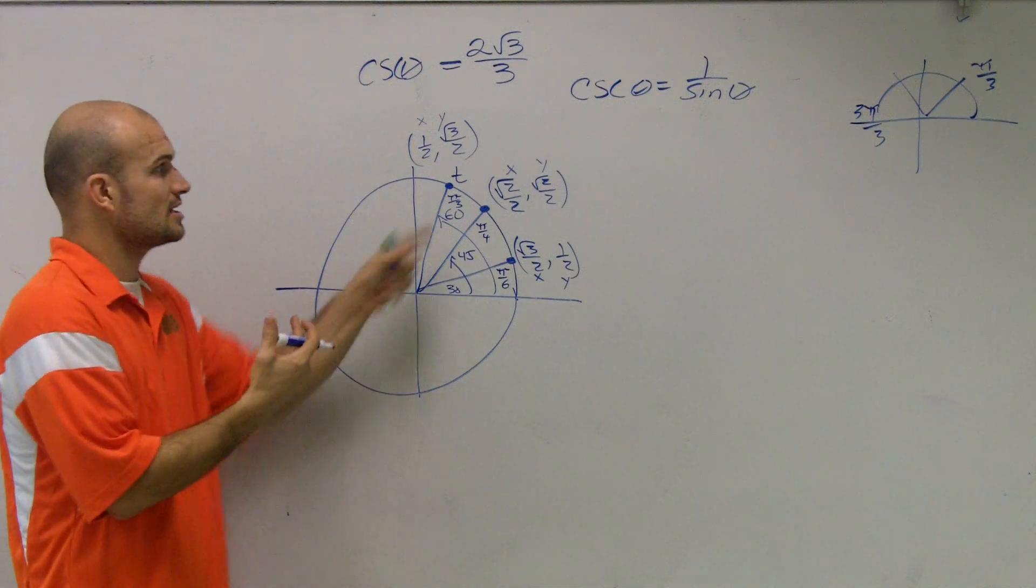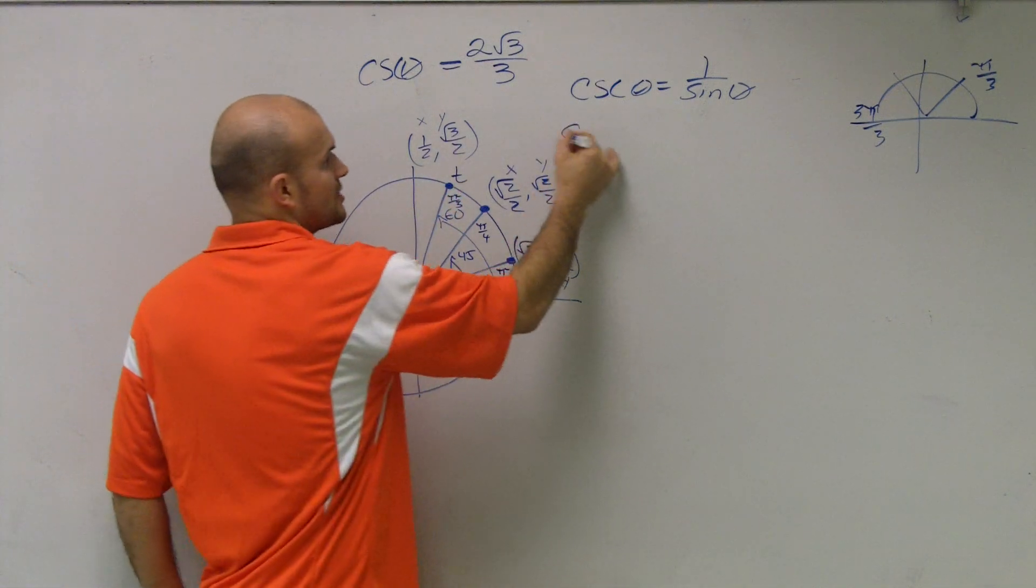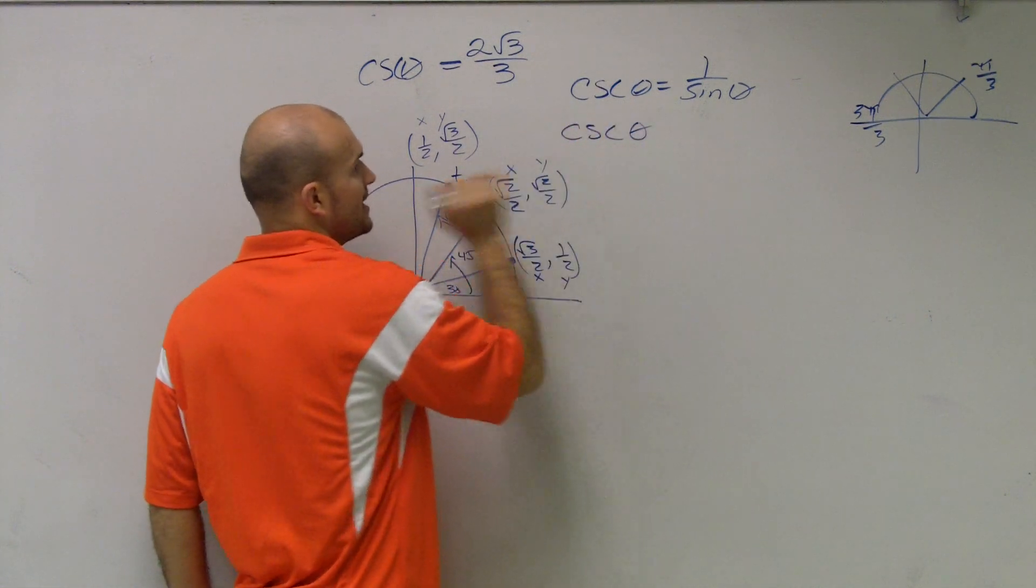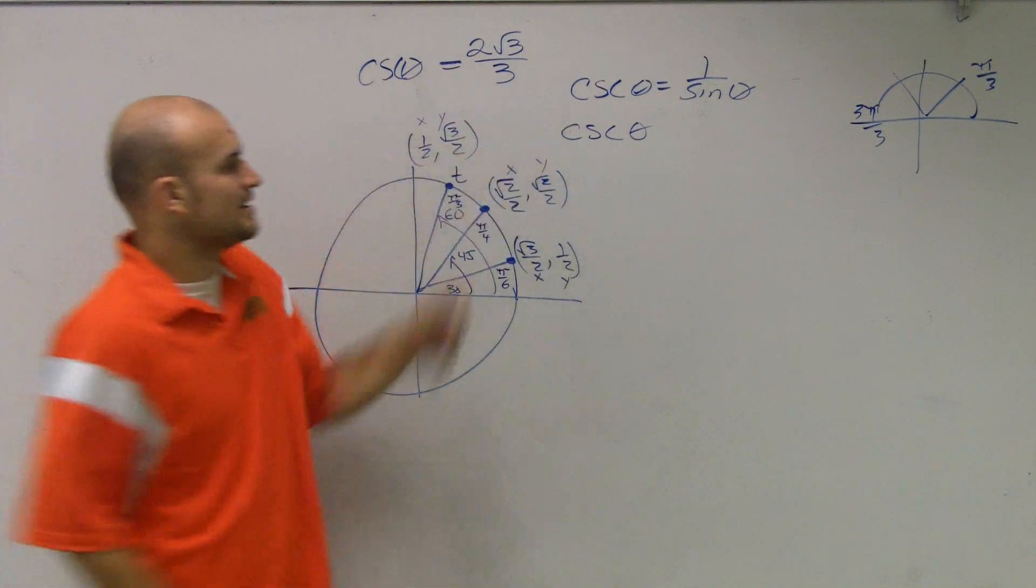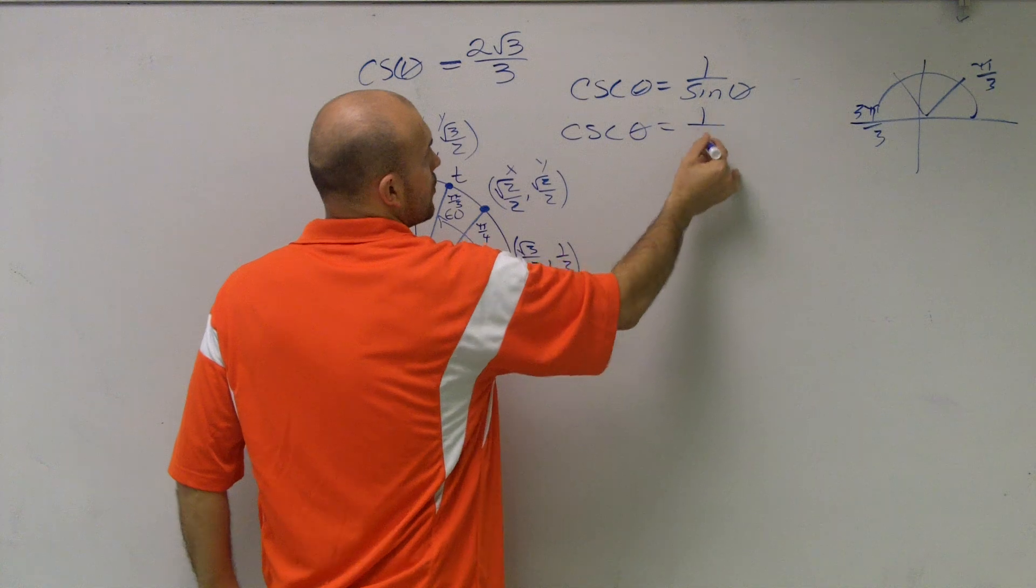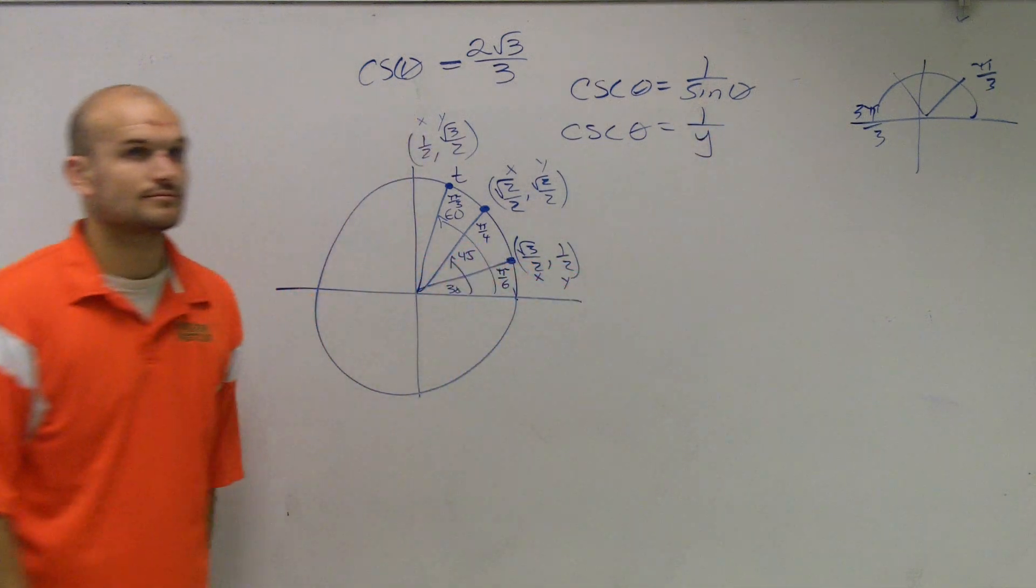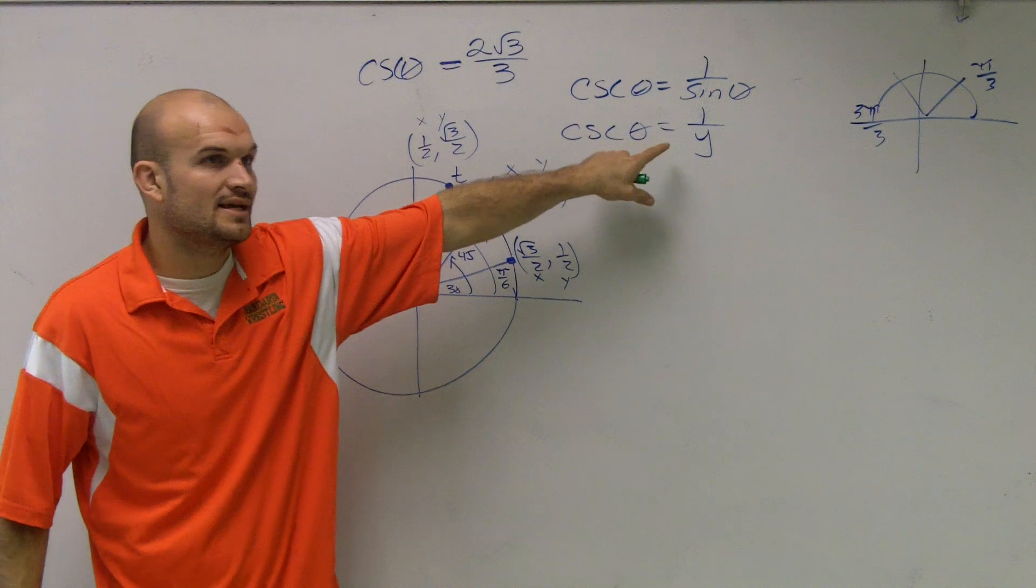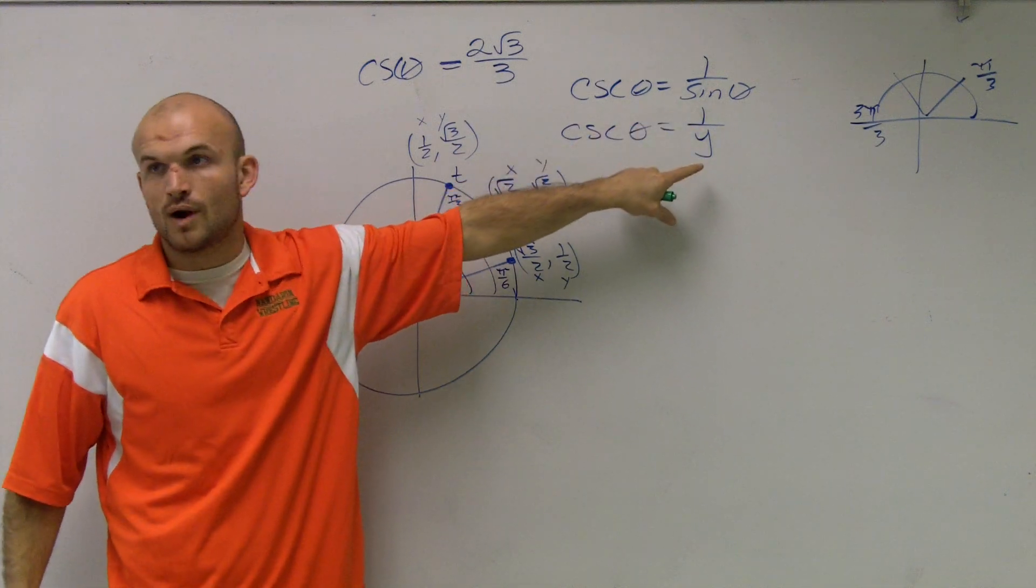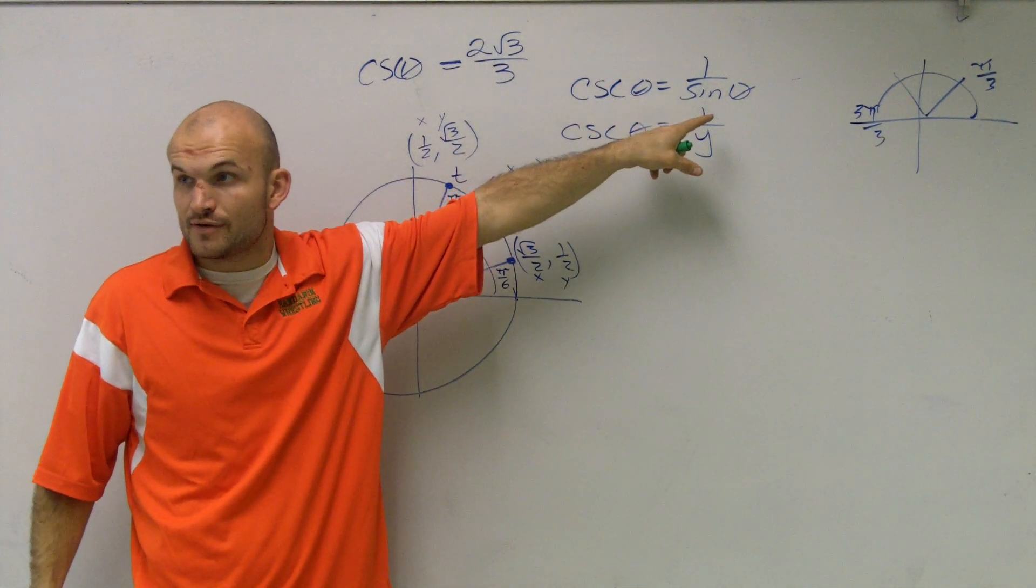When we talked about our point T, we also understood that cosecant of theta is also, if sine is your y, then this is equal to 1 over your y. When you're talking about a point T, that represents 1 over y, because sine is represented by your y.